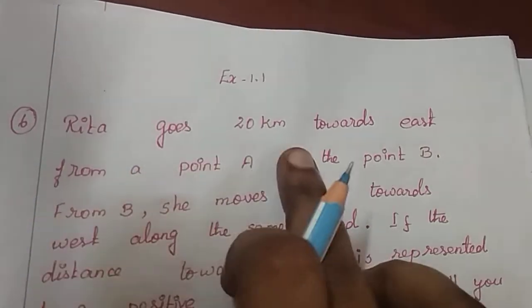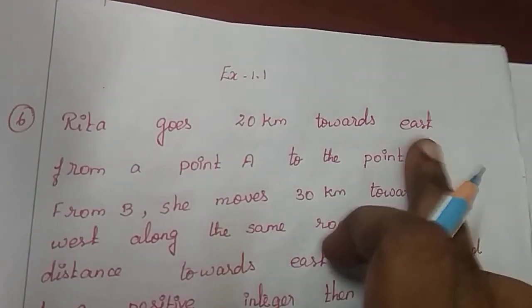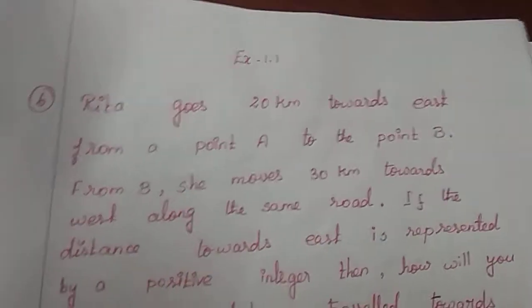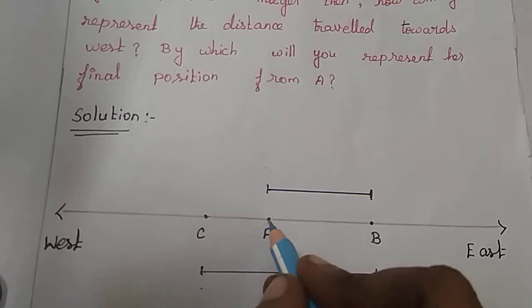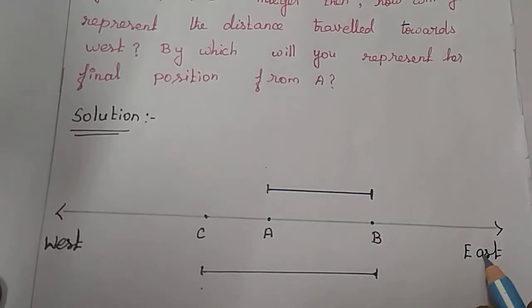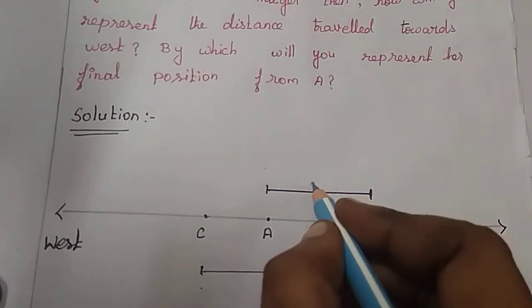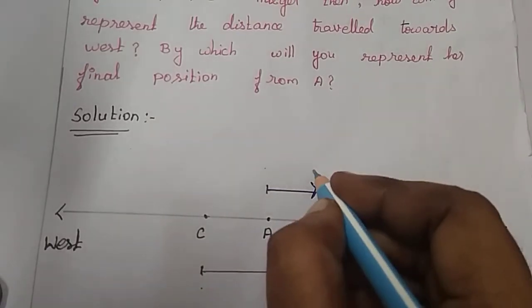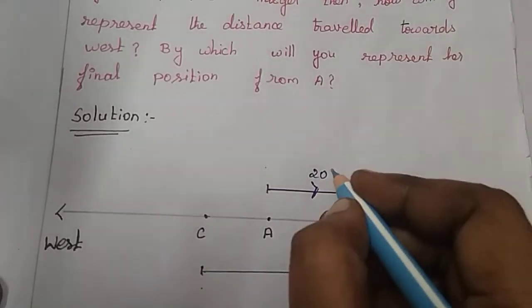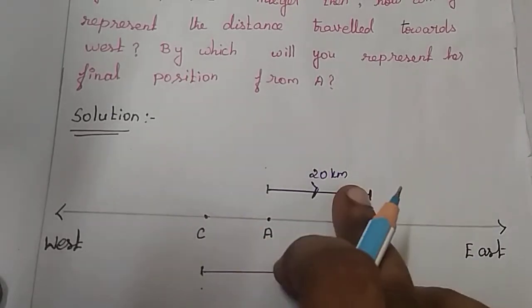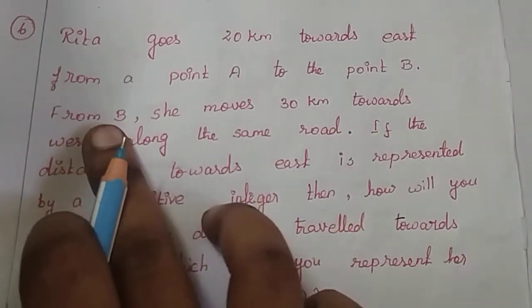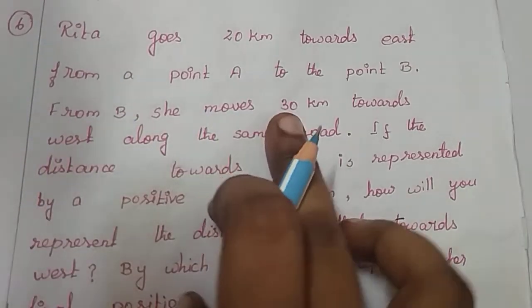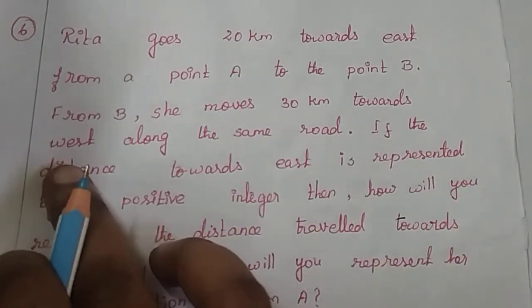Rita goes 20 kilometers towards east from a point A to the point B. Our origin is A, and she travels 20 kilometers east. So A to B distance is 20 kilometers. Then from B, she moves 30 kilometers towards west along the same road.